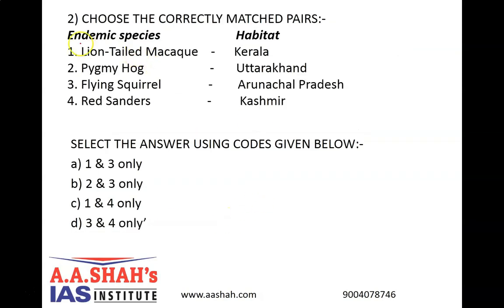Let's move on to question number 2. Choose the correctly matched pairs of endemic species with the habitat. 1. Lion-tailed macaque — Kerala. 2. Pygmy hog — Uttarakhand. 3. Flying squirrel — Arunachal Pradesh. 4. Red sanders — Kashmir.